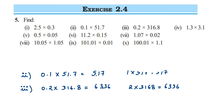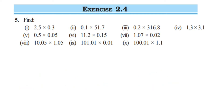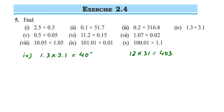The fourth question is 1.3 multiplied by 3.1. This is like 13 multiplied by 31. When you multiply 13 and 31 you get 403. Now placing the decimal: one digit after the decimal in the first number, one digit in the second, so 1 plus 1 equals 2. Counting two digits from the right — 3, 0 — we place the decimal, giving 4.03.